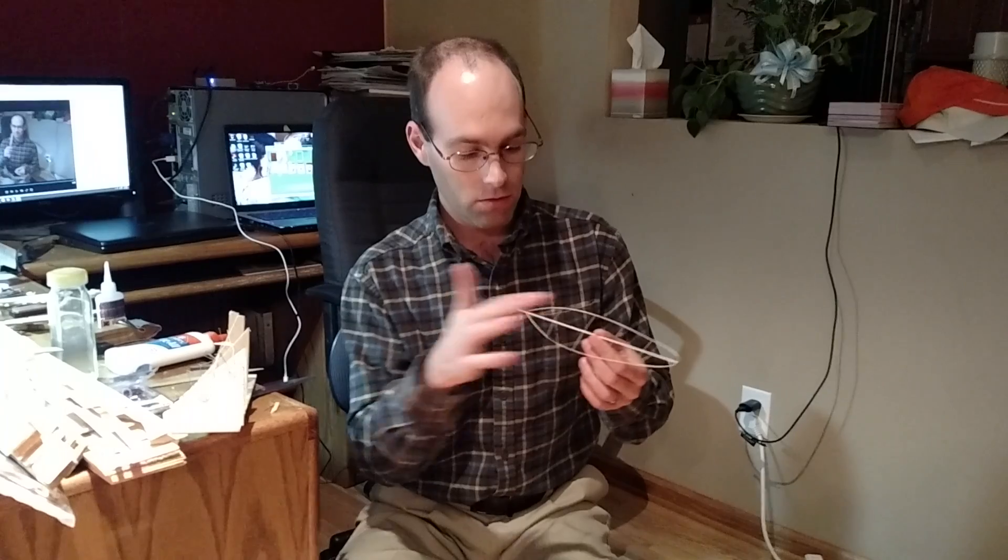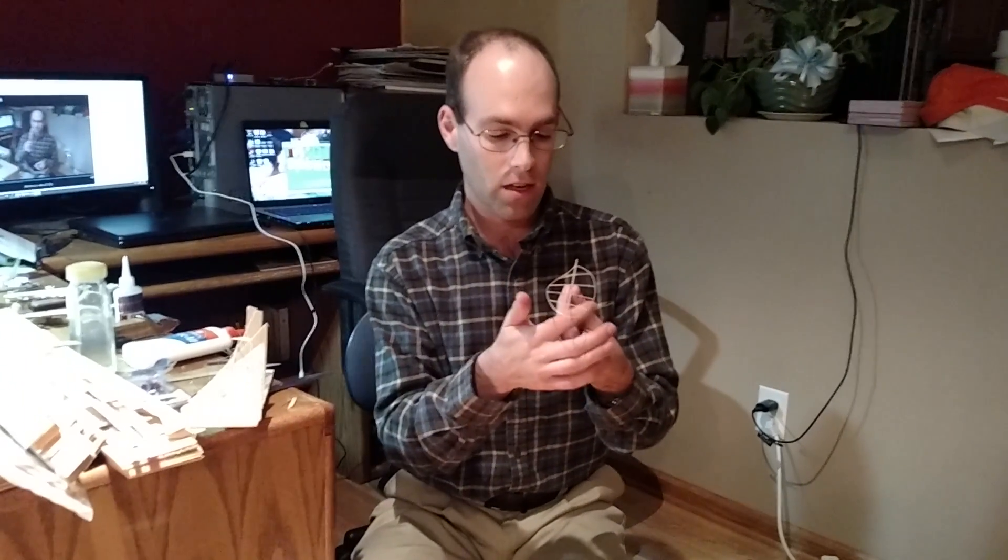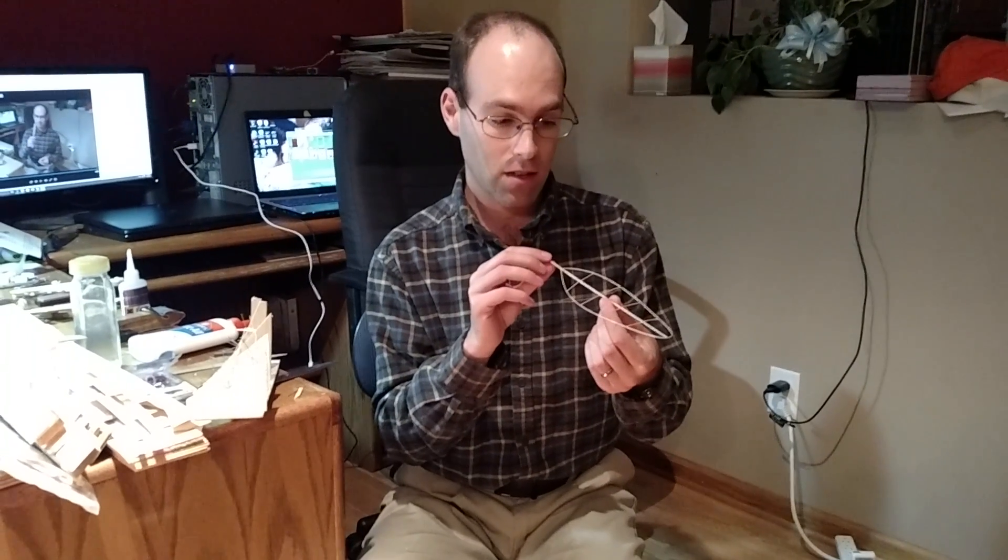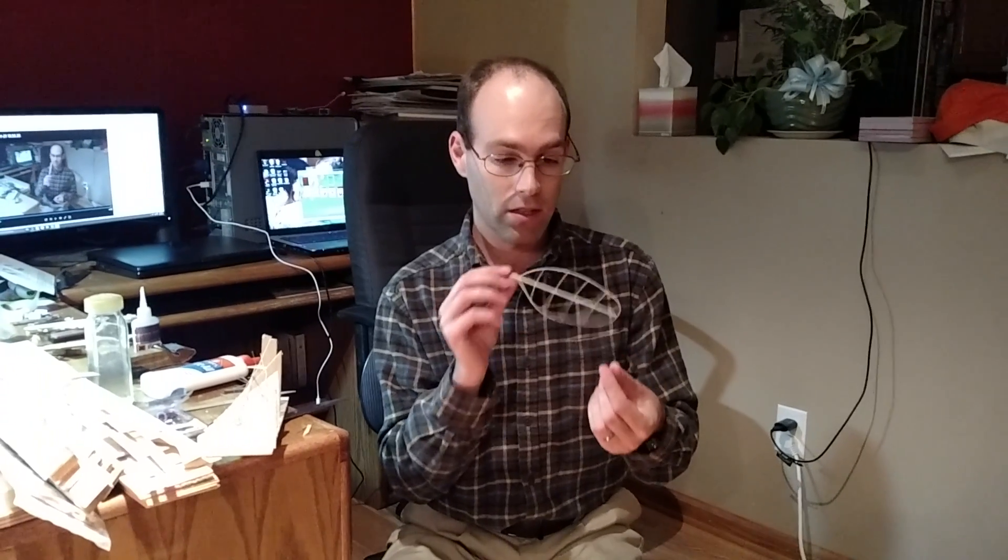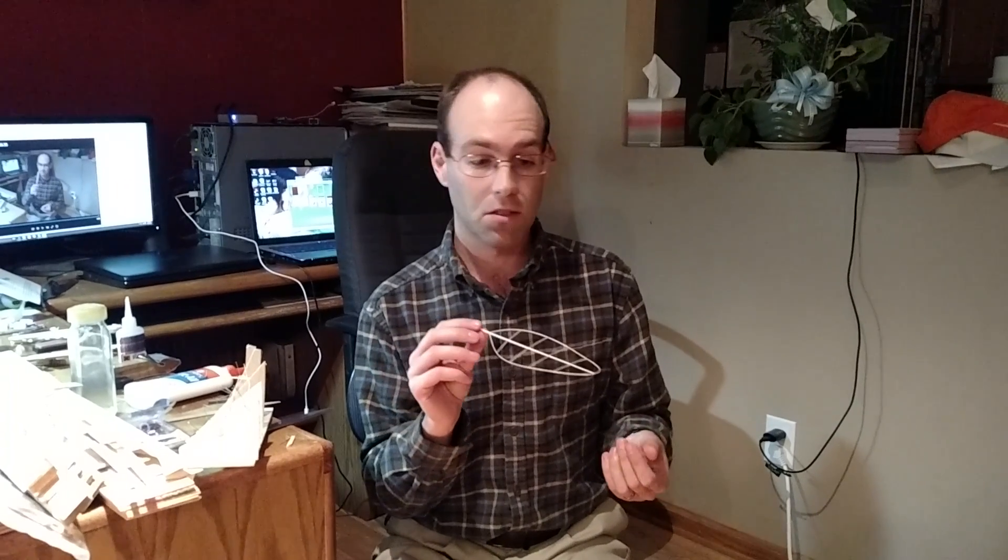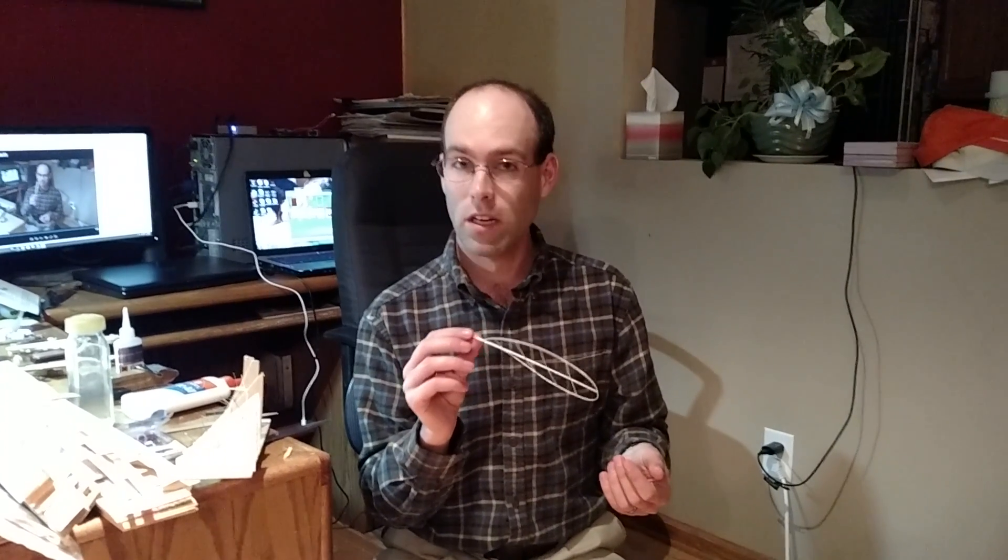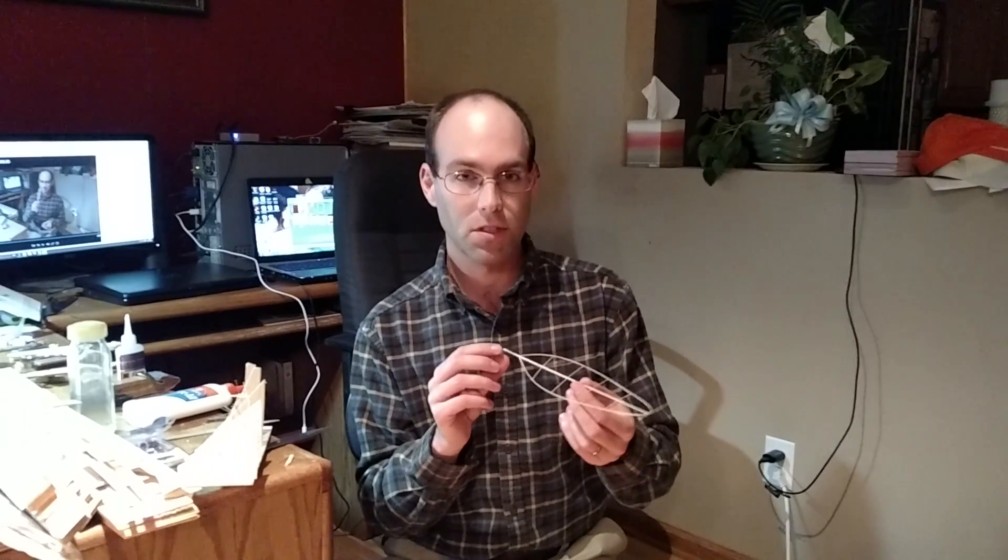And some people use boron to join ribs across spars like this, but I find this joint is pretty strong. I used CA again. It adds several milligrams per joint, but these blades will still end up coming out to a finished prop, a fixed-pitch prop that weighs less than 200 milligrams covered. And I find that's gracious plenty for my purposes.